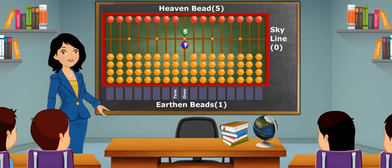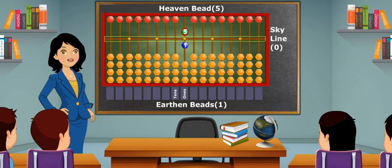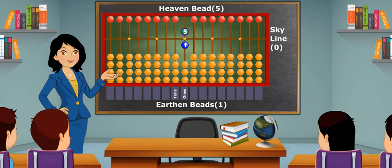When 1 earthen and 1 heaven bead unite at the skyline, it constitutes number 6. That is, 5 heaven plus 1 earthen equals 6.